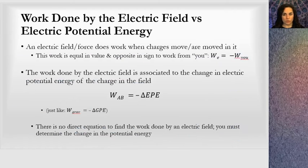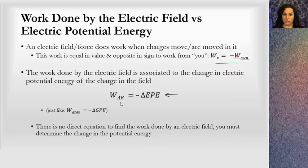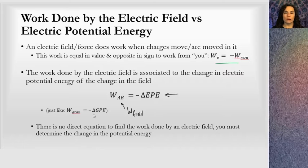In summary: an electric field or force does work when charges move through it, and this work is equal in value and opposite in sign to the work you do. The work done by the field is the negative change in electric potential energy — similar to how the work done by gravity is the negative change in gravitational potential energy.